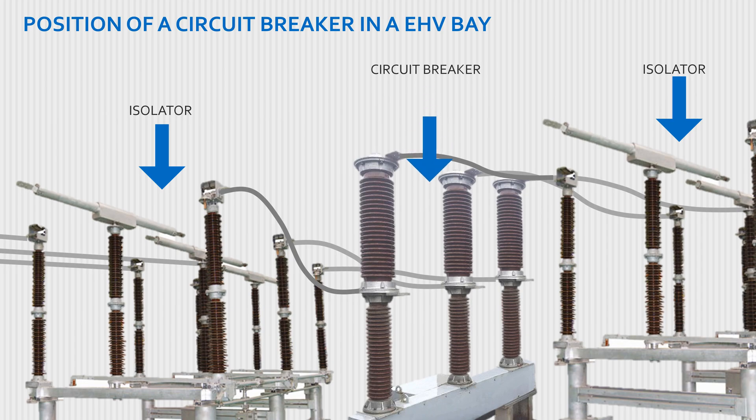Generally in EHV systems, a circuit breaker is installed at the middle of two isolators for the convenience of taking a shutdown of the circuit breaker.